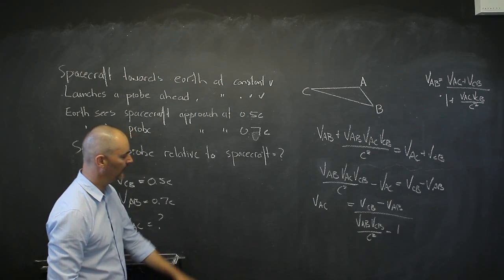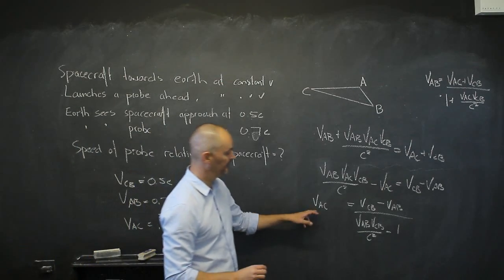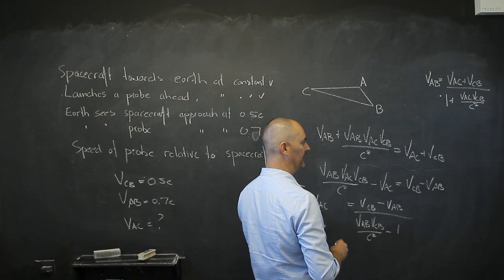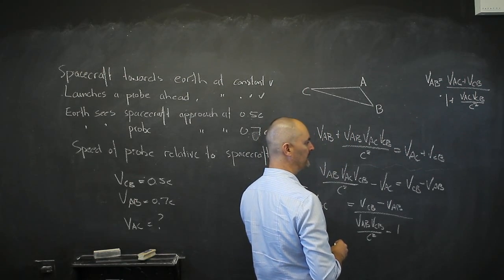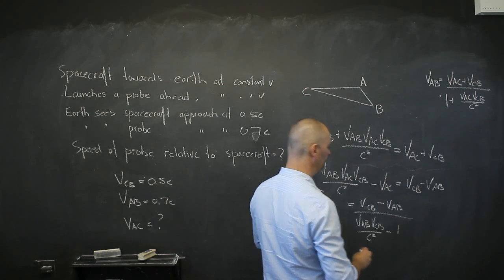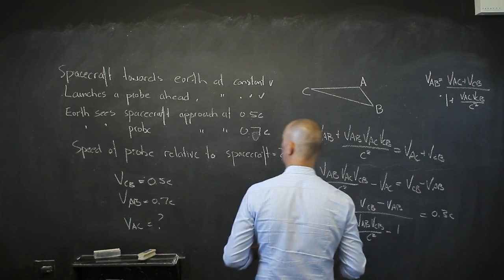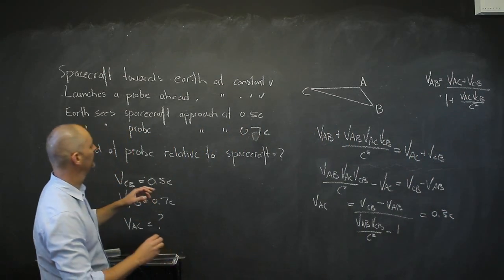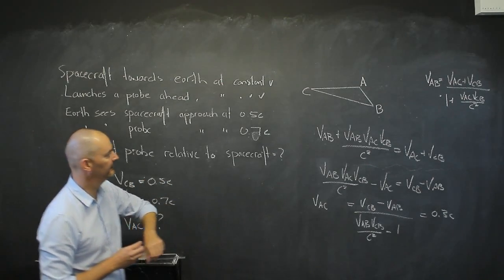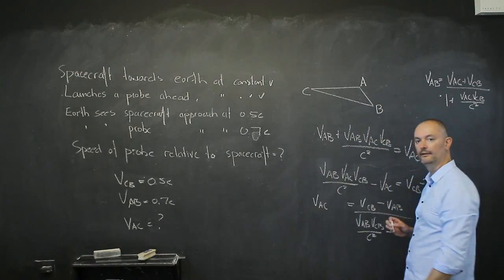If you plug all of those values in, you'll get an answer for VAC. That gives 0.3c. So as far as the spacecraft is concerned, it is launching that probe at 0.3c, while we on Earth see that probe coming at 0.7c.